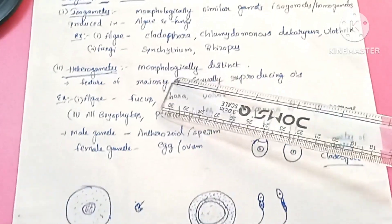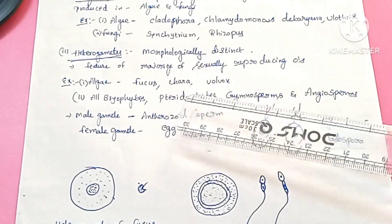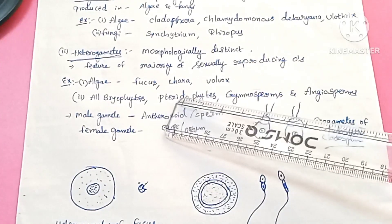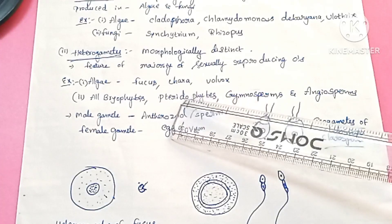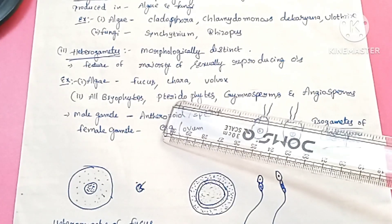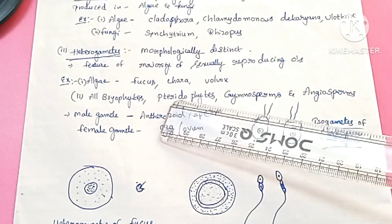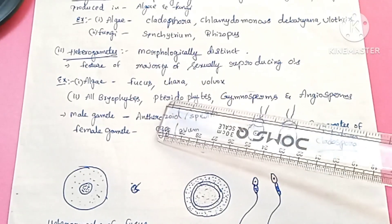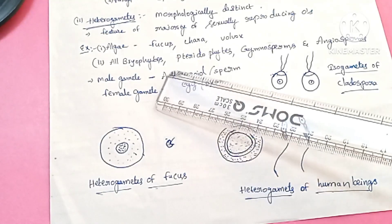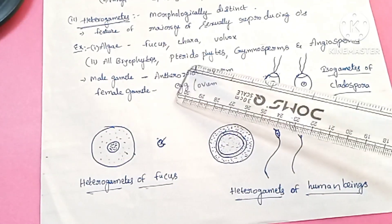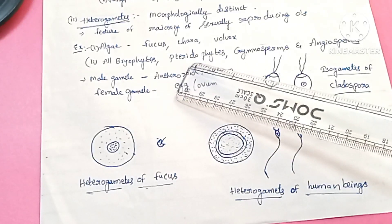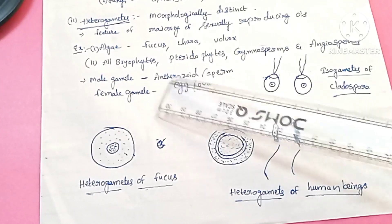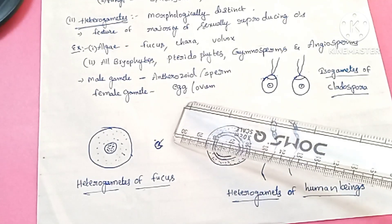Heterogametes are morphologically different gametes. The majority of sexually reproducing organisms have heterogametes. Examples of organisms producing heterogametes include algae such as Fucus, Volvox, and Chara, as well as plants. These are called heterogametes.